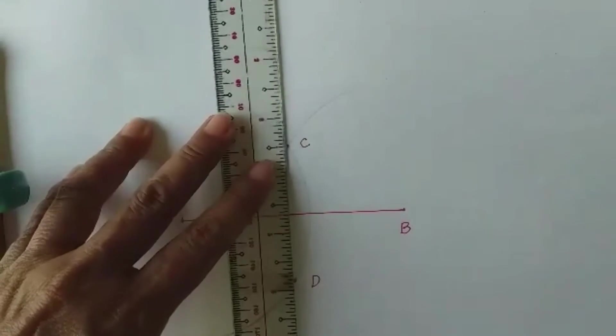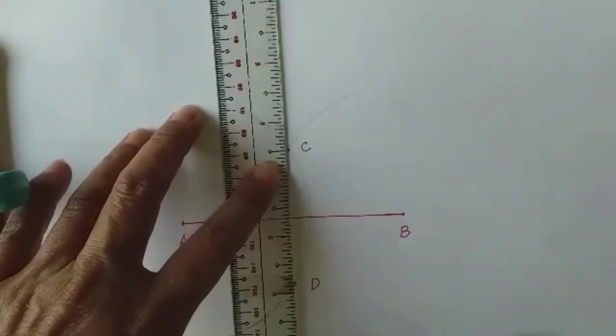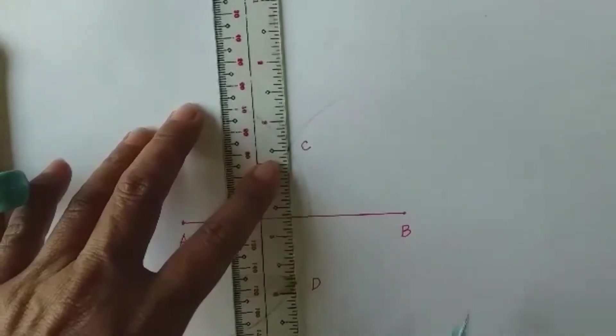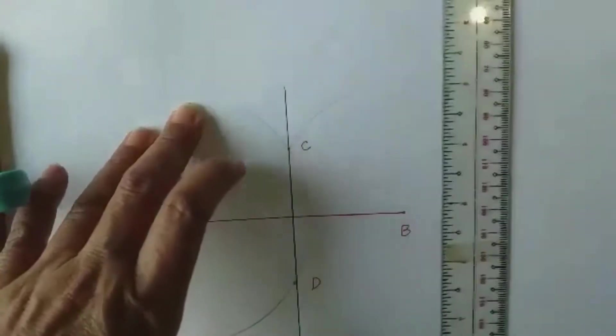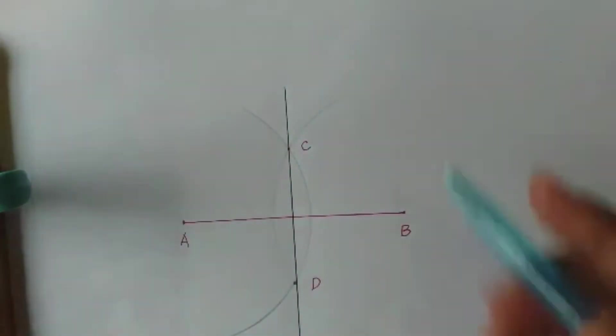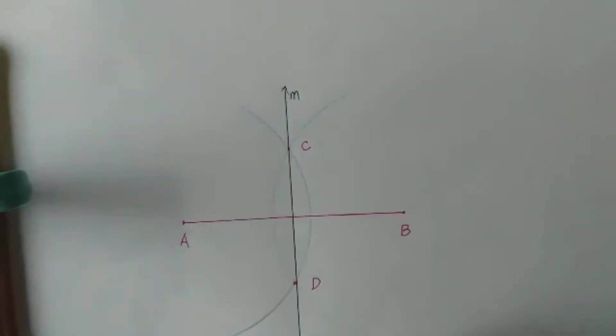Now get your ruler and connect points C and D. Let us name the line now connecting point C and D as line m.